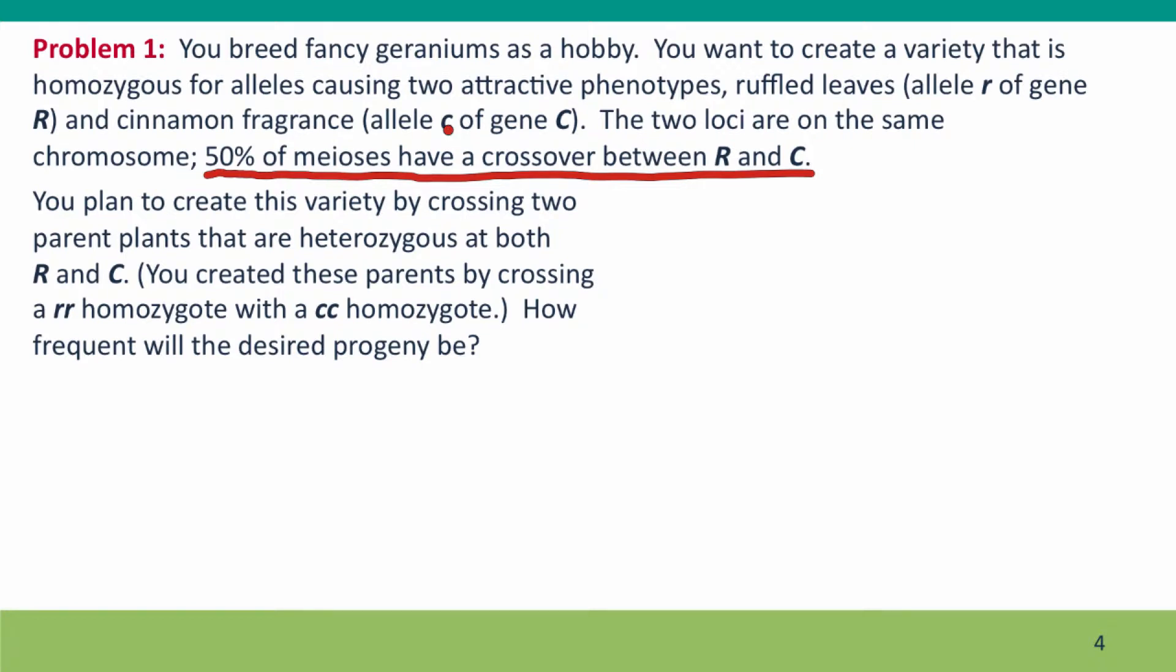So what's the first step? You'd say probably the first step is what will the gametes be. But they're crossing two plants that are identical. What's their genotype? They're heterozygous at R and heterozygous at C. So their genotype must be big R little r, big C, little c.